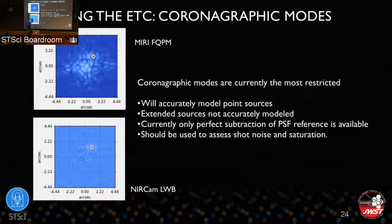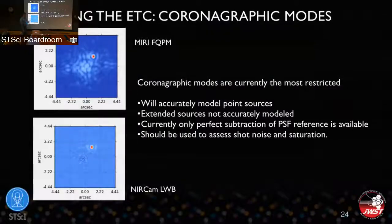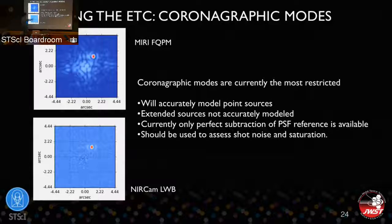For IFU calculations in both NIRSpec and MIRI, you always do a dither to subtract background. These dithers approximate but are not exactly the same as those available in APT, but it doesn't make a material difference for signal-to-noise within the ETC framework. When doing a dither inside your field for a point source, you'll see a blank region because only the overlapping area is shown. For coronagraphic modes, they are currently the most restricted modes. The ETC accurately models point sources but not extended sources across coronagraphic fields, because it cannot convolve an extended source with a PSF that changes dramatically across the field. Currently only perfect PSF subtraction is modeled, so coronagraphic calculations represent a shot noise limit — the fundamental best-case limit.